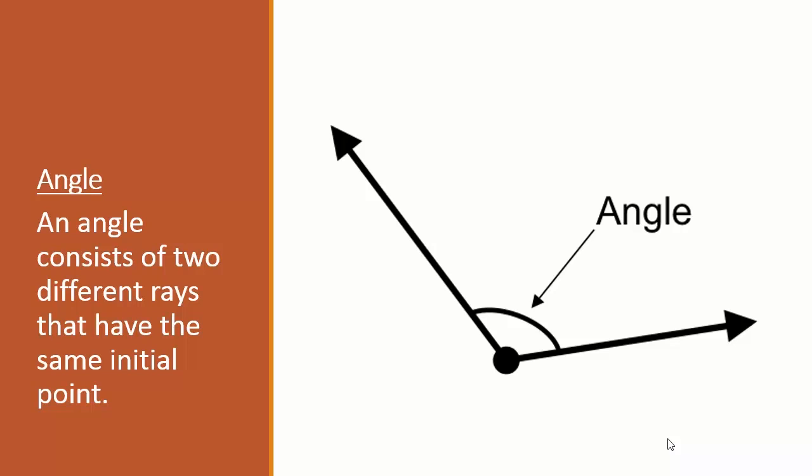An angle consists of two different rays that have the same initial point. Remember a ray has an initial point and then the line has an arrowhead that shows that it goes on forever. When you have two rays together, as you can see over here, this is one ray and this is the second ray, and where these two rays meet they create an angle.